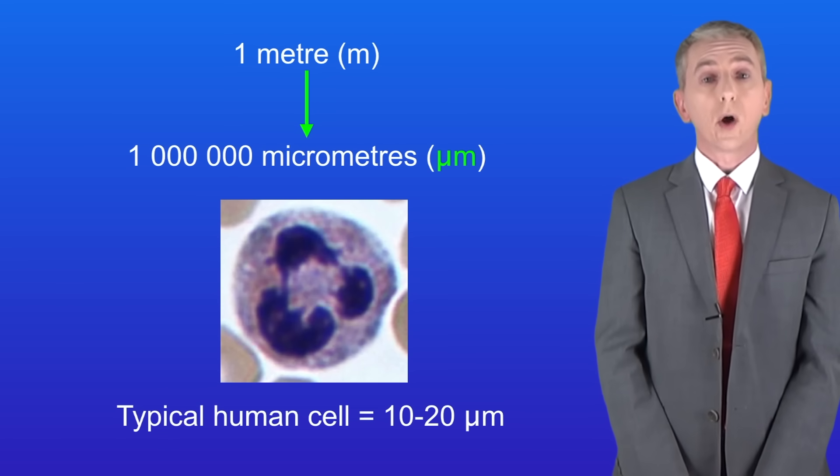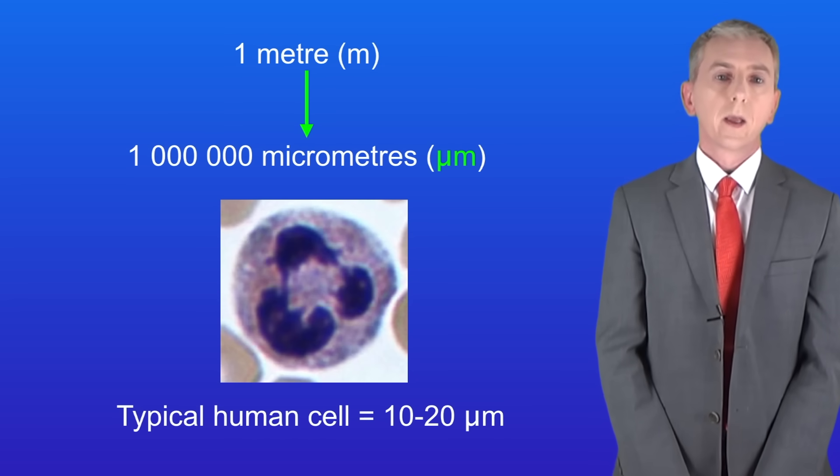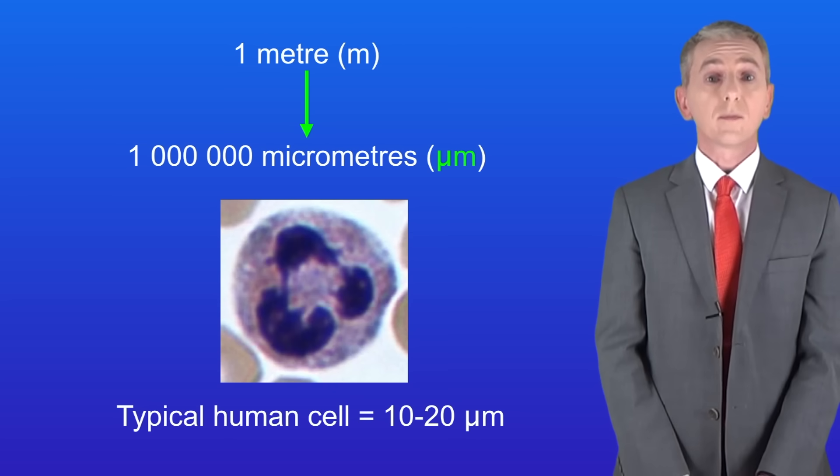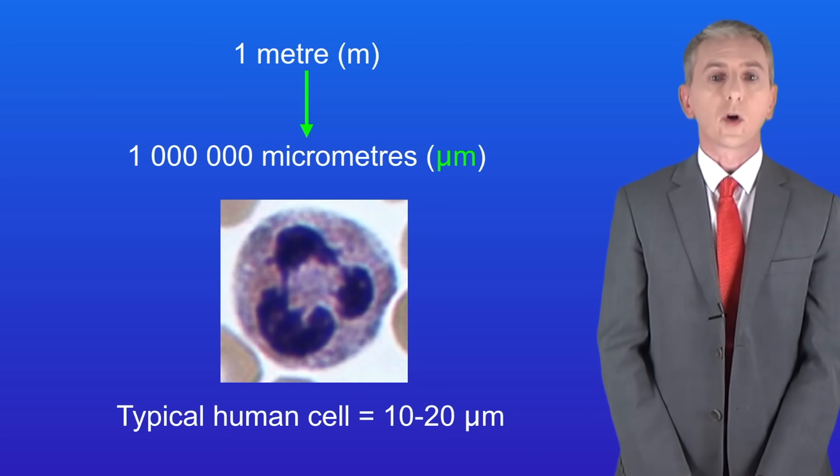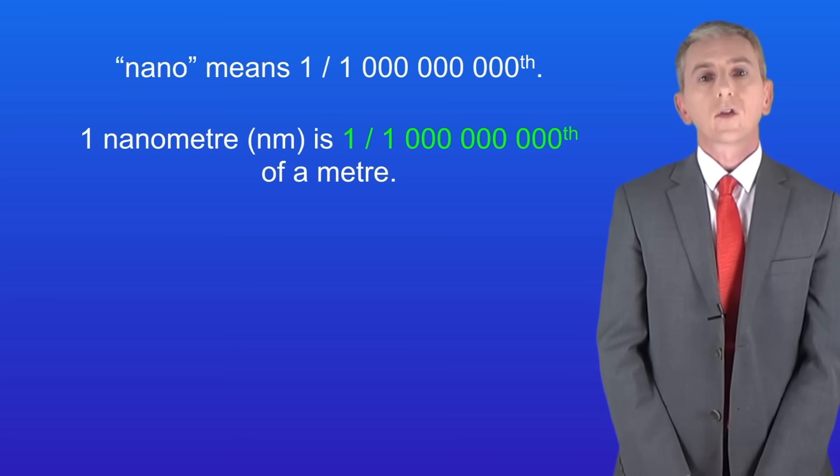Cells contain smaller parts such as ribosomes and we're going to look at those in a later video. This means that we need an even smaller unit to talk about the sizes of objects inside cells. So the final unit we're going to look at is called the nanometer.